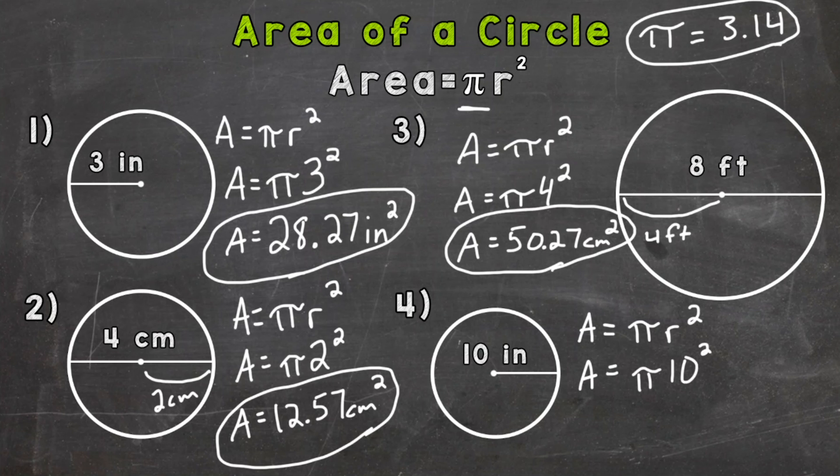Then we'll plug in our radius of 10 inches. So pi times 10 squared and we get an answer of 314.16. Now again that's rounded to the hundredths place because we got a fairly long decimal there so we rounded to the hundredths and our unit is inches. And whenever we do area remember it's square units. So 314.16 square inches.